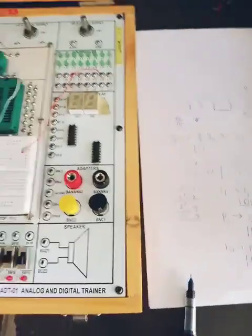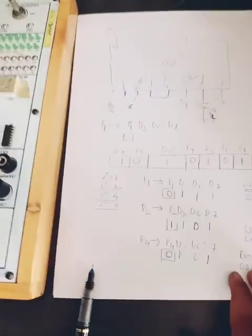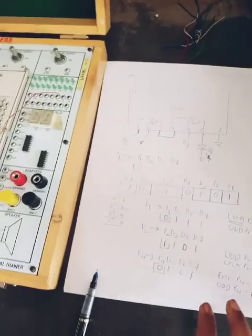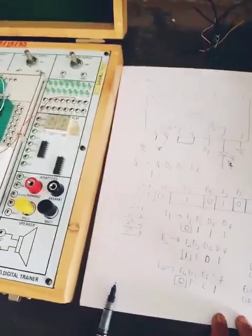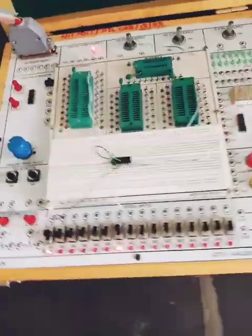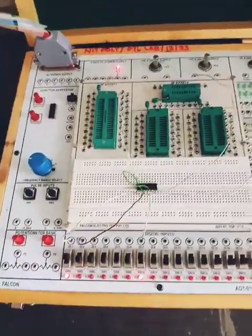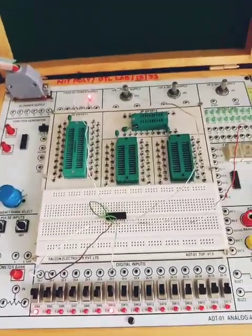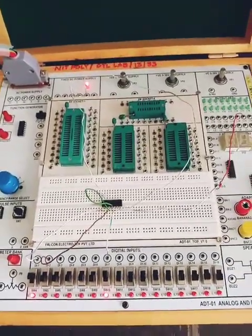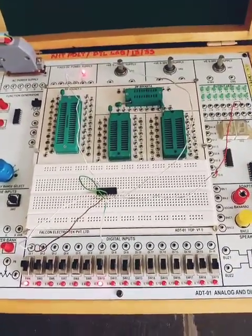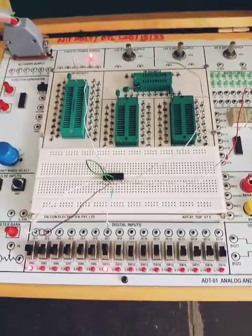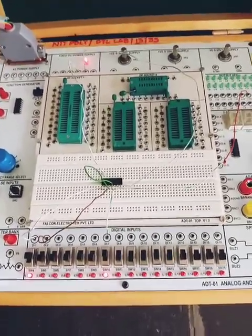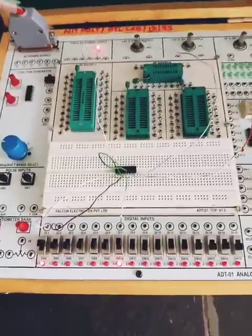So that is the complete technique of how parity bits are generated, demonstrated side by side with connections. Thank you so much students for watching this video carefully on generating the Hamming codes for 4-bit data. Thank you.